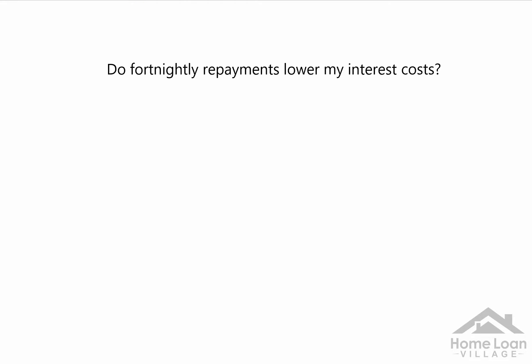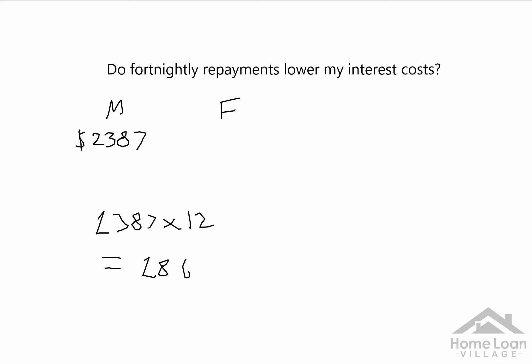So we're going to do a little bit of basic math here. If you have monthly repayments at $2,387, how would we work out our fortnightly repayments? A normal person will generally go: there are more than two fortnights in a month, 12 months in a year. So let's annualize it — multiply $2,387 by 12, which equals $28,644. There are 26 fortnights in a year, so we divide that by 26, and we get to $1,101 — which is exactly what we got before.